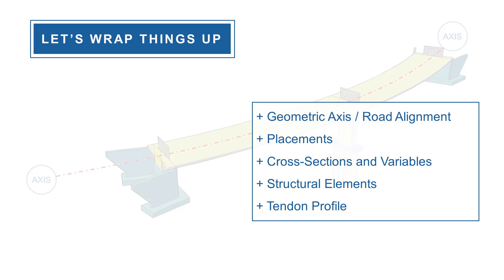The four significant steps of parametric modeling in SOFiSTiK and AutoCAD are: To define the geometric axis or road alignment. To specify placements, which represent the relevant points of the structure along the axis, such as supports, start point and end point. To create the cross section, which can be either a standard or constant cross section, or a user defined cross section with variables.